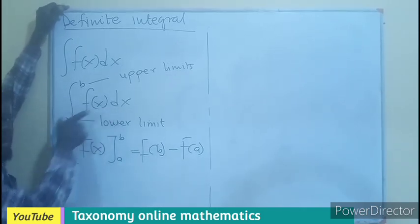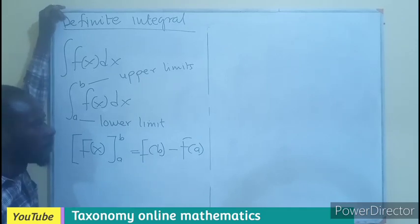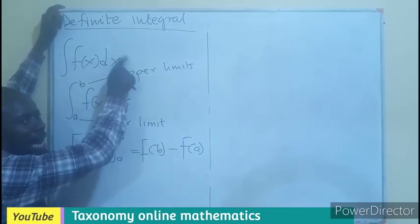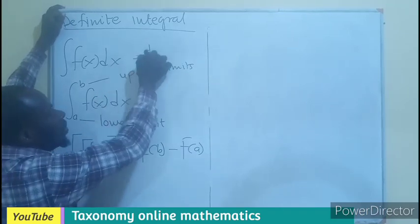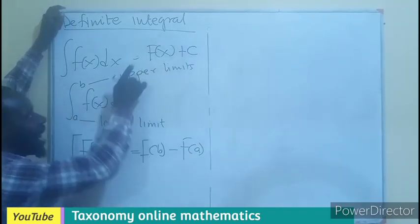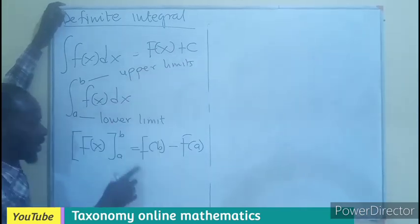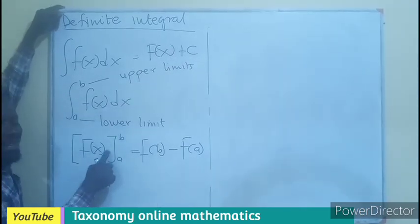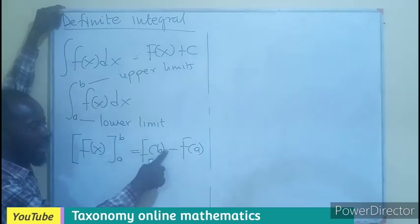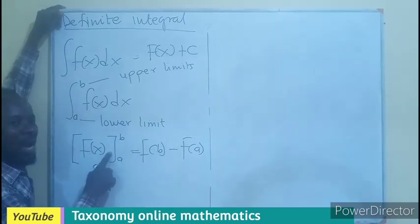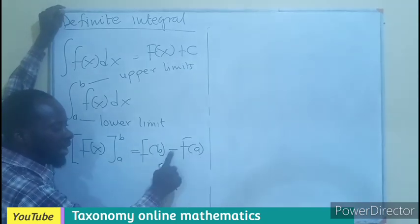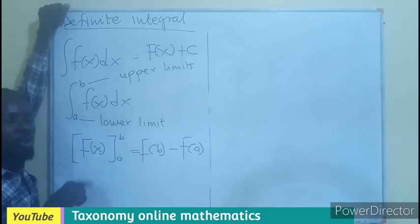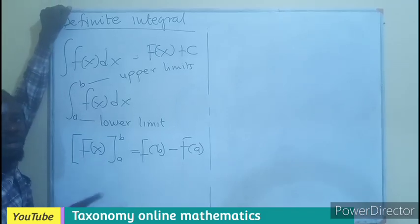In this case, we are not adding the constant term here. We are not adding the constant term because there is a subtraction involved. This could be plus C, then B will come, so plus C will be here, then the second one plus C will be here. You can see minus will make the C cancel out, so no need even introducing the value of C.